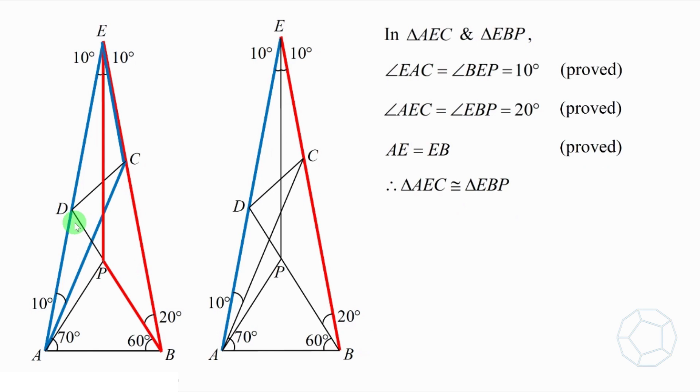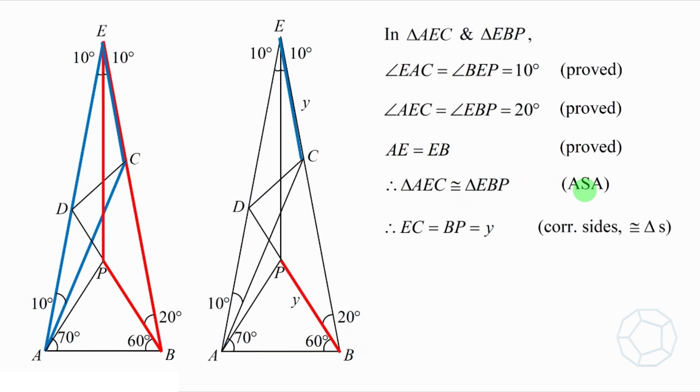Therefore, triangle AEC and triangle EBP are congruent. And the reason is ASA. Now, we get another pair of corresponding sides of congruent triangles. EC and BP are equal. Both are Y.